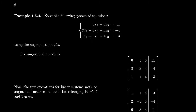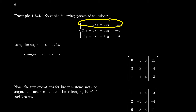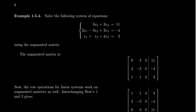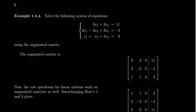Let's take another system of equations — another three by three example — and construct the augmented matrix. The first row would be [0, 3, 3 | 11], the second row [2, -3, 3 | -4], and the final row [1, 1, 4 | 3]. Make sure your variables are in the right order — if someone tricks you and writes x2 before x1, you still need to put the coefficients in the correct order.